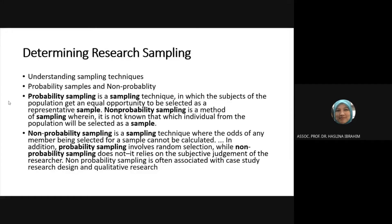Probability sampling is a method wherein it is not known which individual from the population will be selected as a sample. In probability, everyone in that apartment is your potential sample, because probable means everyone has an equal chance.